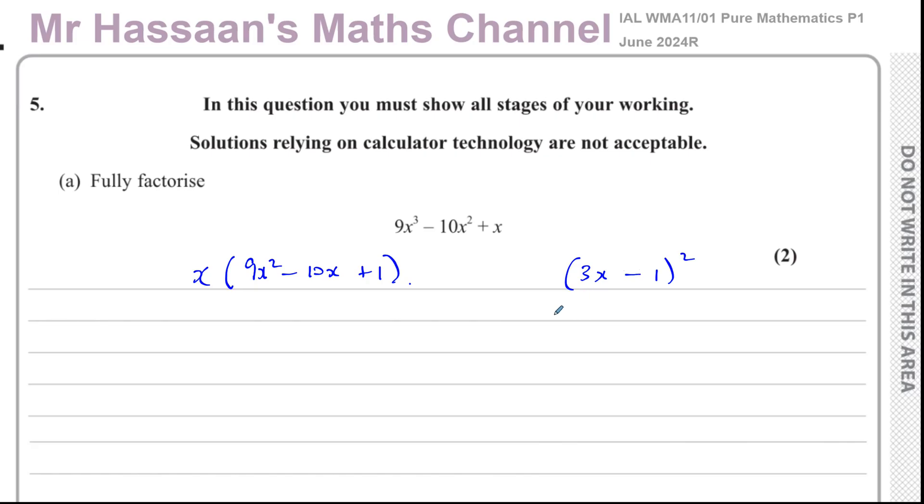But unfortunately, this doesn't work. Why? Because the middle term in this case, the first term would be 9x squared. That's good. The last term would be plus 1, which is fine. But the middle term would be 2 times 3x times minus 1. So you'll end up with 9x squared minus 6x plus 1, which is not the same as this.